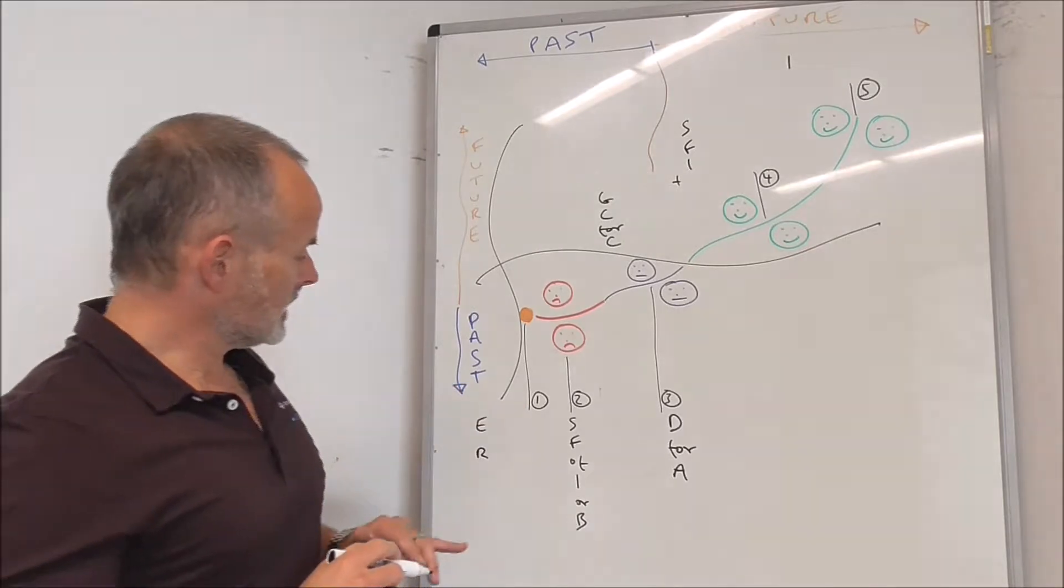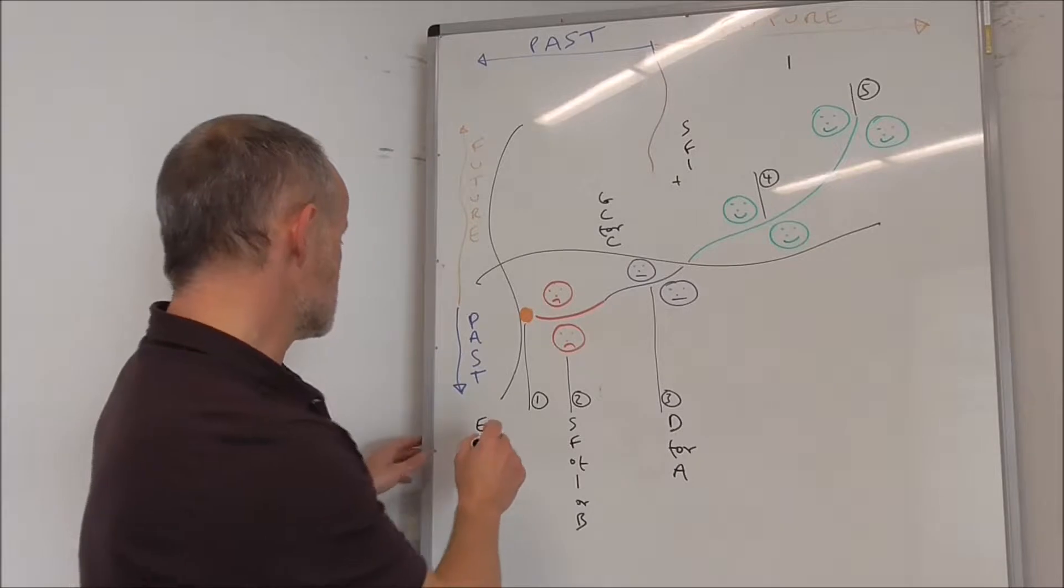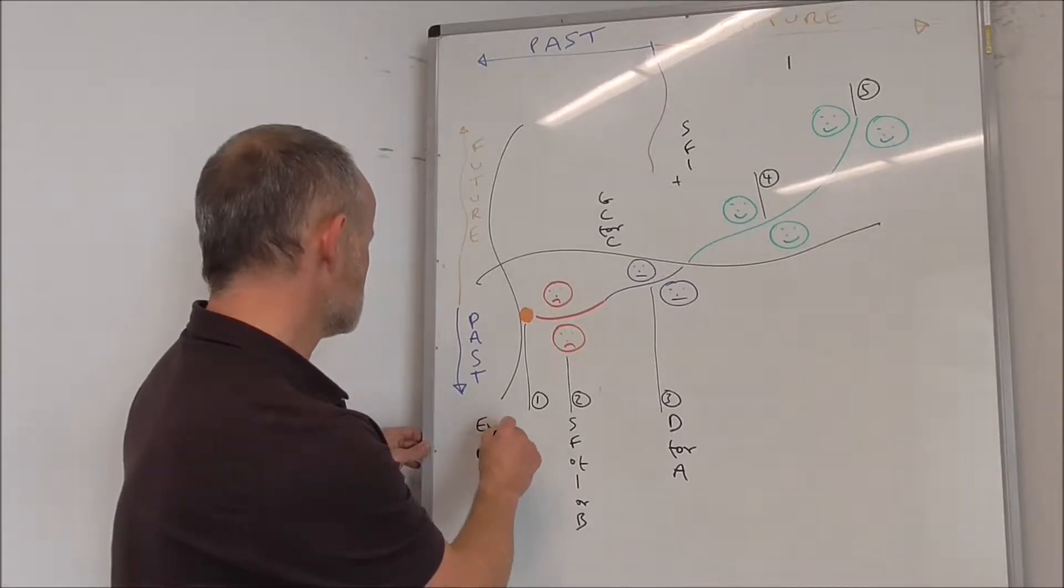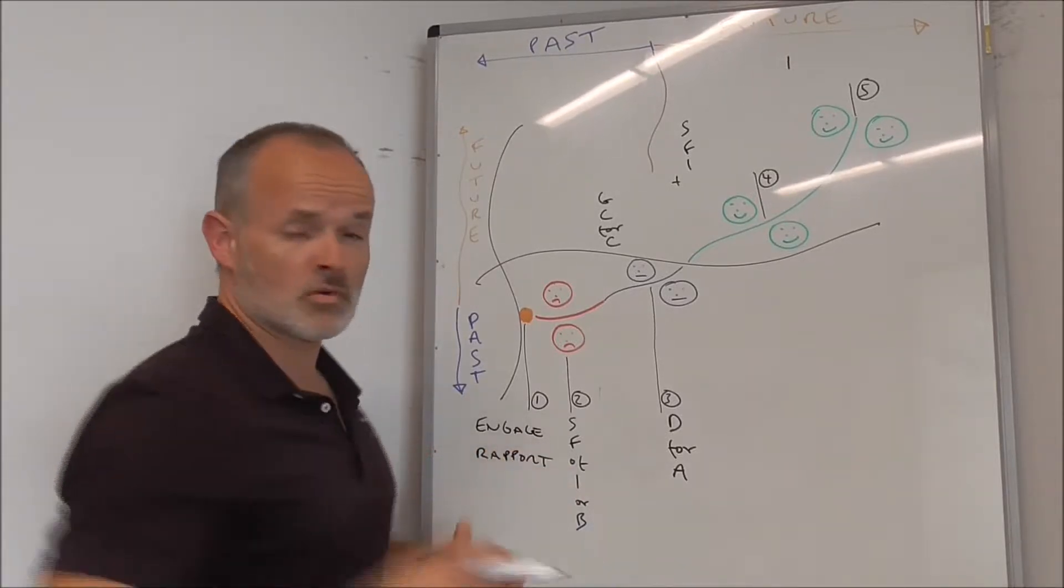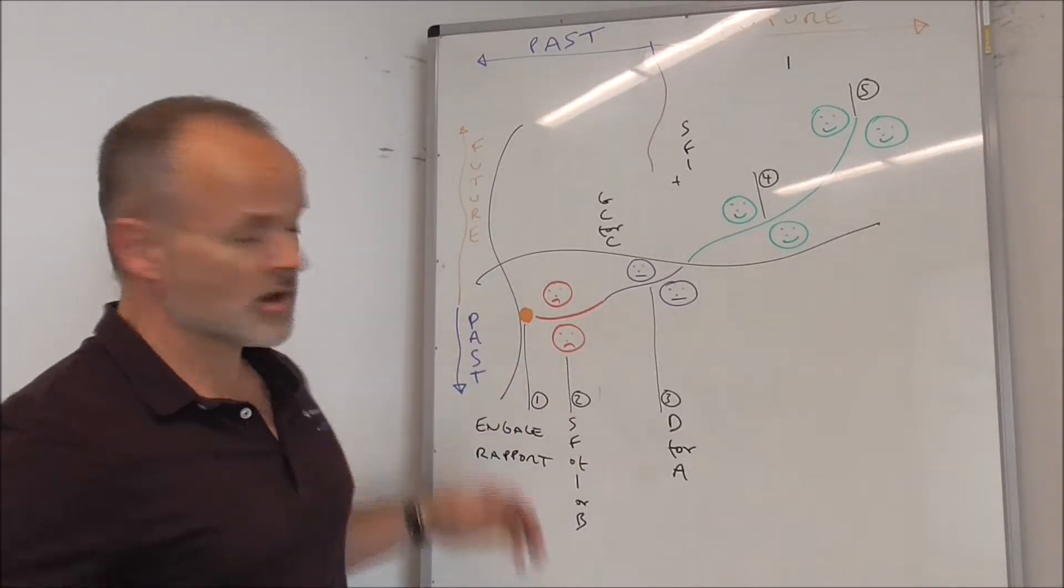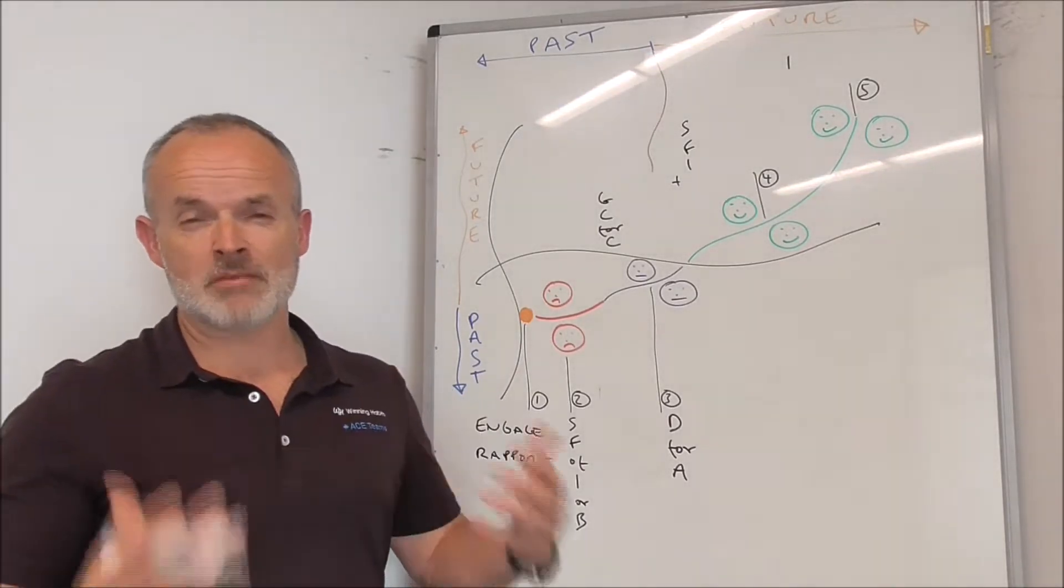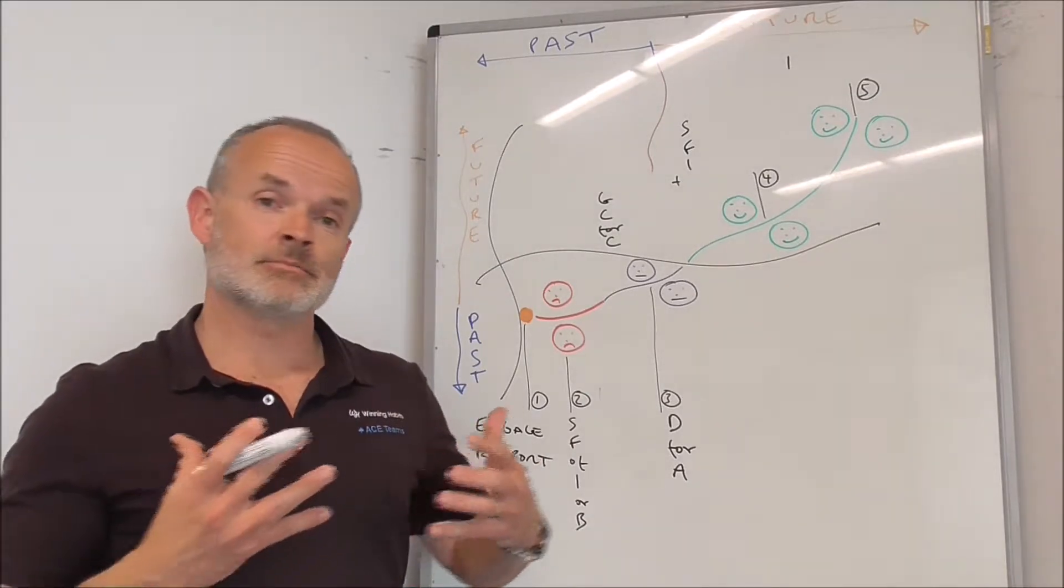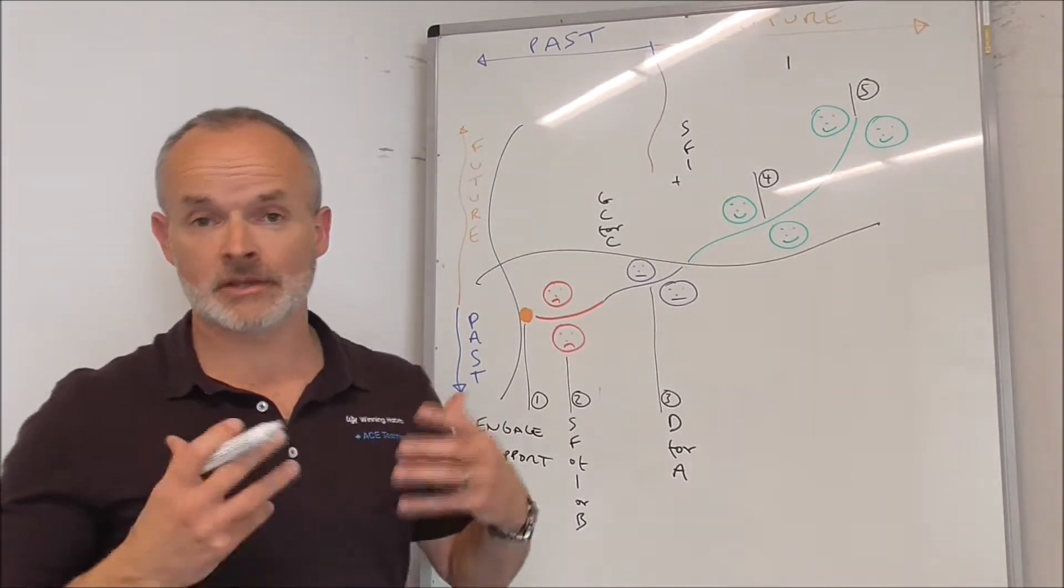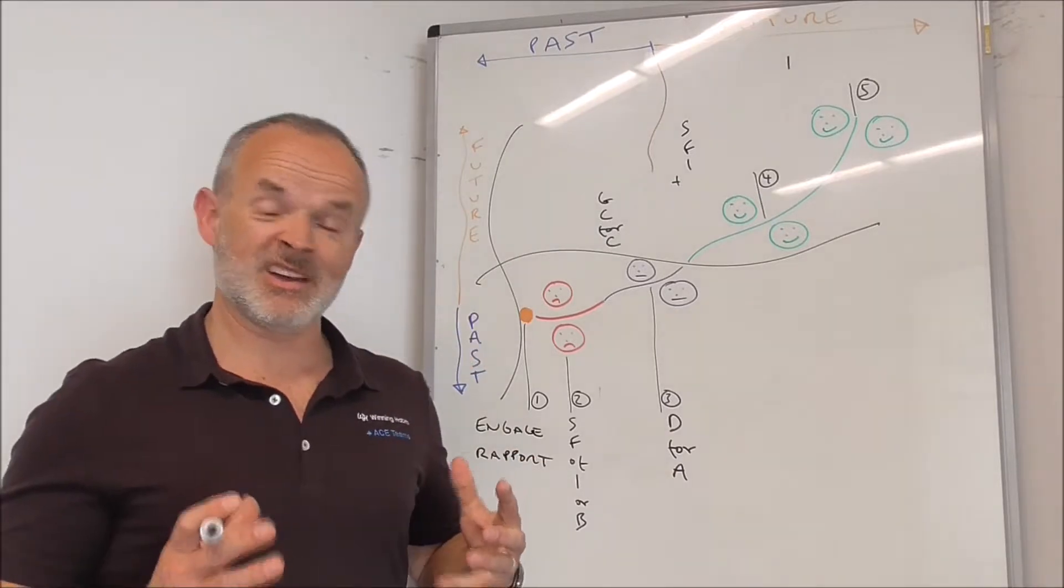The first point of the model here is ER, and this is Engage Rapport. We must be in rapport with the other party if they're going to listen to us, if they're going to deploy empathy with us. Go back to rapport, connect, be social, common ground, humor.